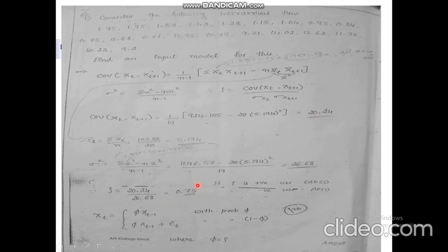The calculated rho value is 0.75, which is a positive value. Since rho is positive, we choose the EAR1 model. If rho had been negative, we would have chosen the AR1 model.